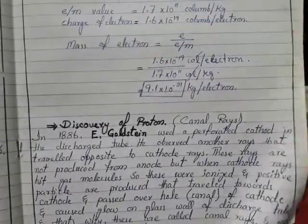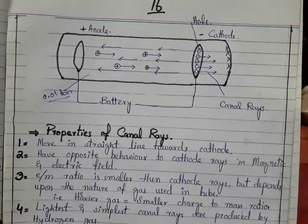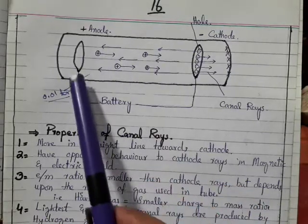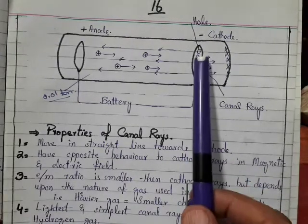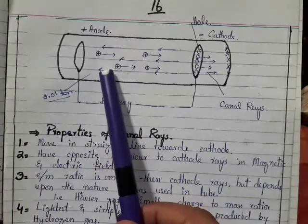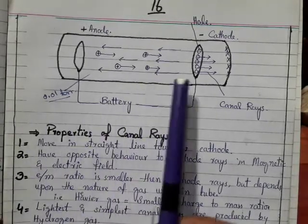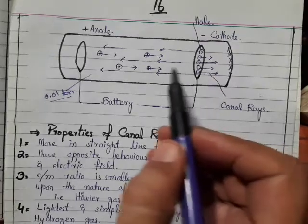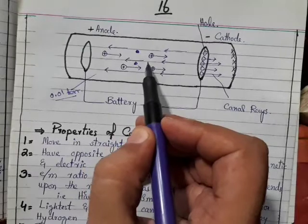Let's see the diagram of the canal rays. Here is the gas discharge tube experiment. This is the anode and this is the cathode with perforated holes. 0.01 torr internal pressure was created and 10,000 voltage was supplied. Then cathode rays are produced.